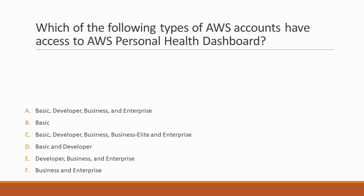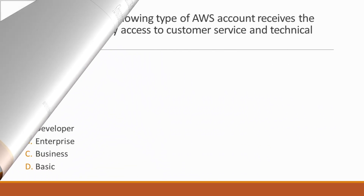Next question: Which of the following types of AWS accounts have access to AWS Personal Health Dashboard? Options: A. Basic, Developer, Business, and Enterprise, B. Basic, C. Basic, Developer, Business, and Enterprise, D. Basic and Developer, E. Developer, Business and Enterprise, F. Business and Enterprise. Correct answer is option A, because all AWS accounts have access to AWS Personal Health Dashboard.